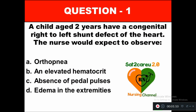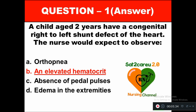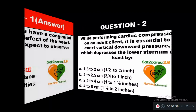Question 1: A child aged 2 years has a congenital right-to-left defect of the heart. The nurse would expect to observe: option A orthopnea, option B an elevated hematocrit, option C absence of pedal pulses, option D edema in the extremities. The right answer is B, an elevated hematocrit levels.